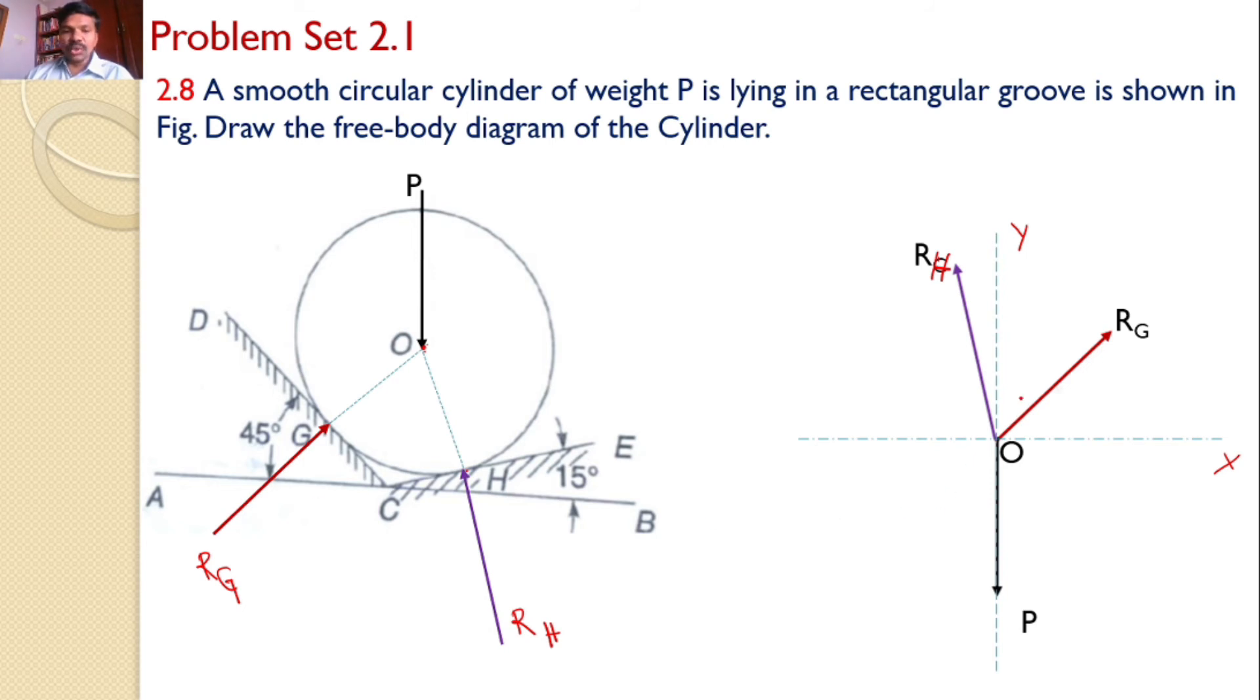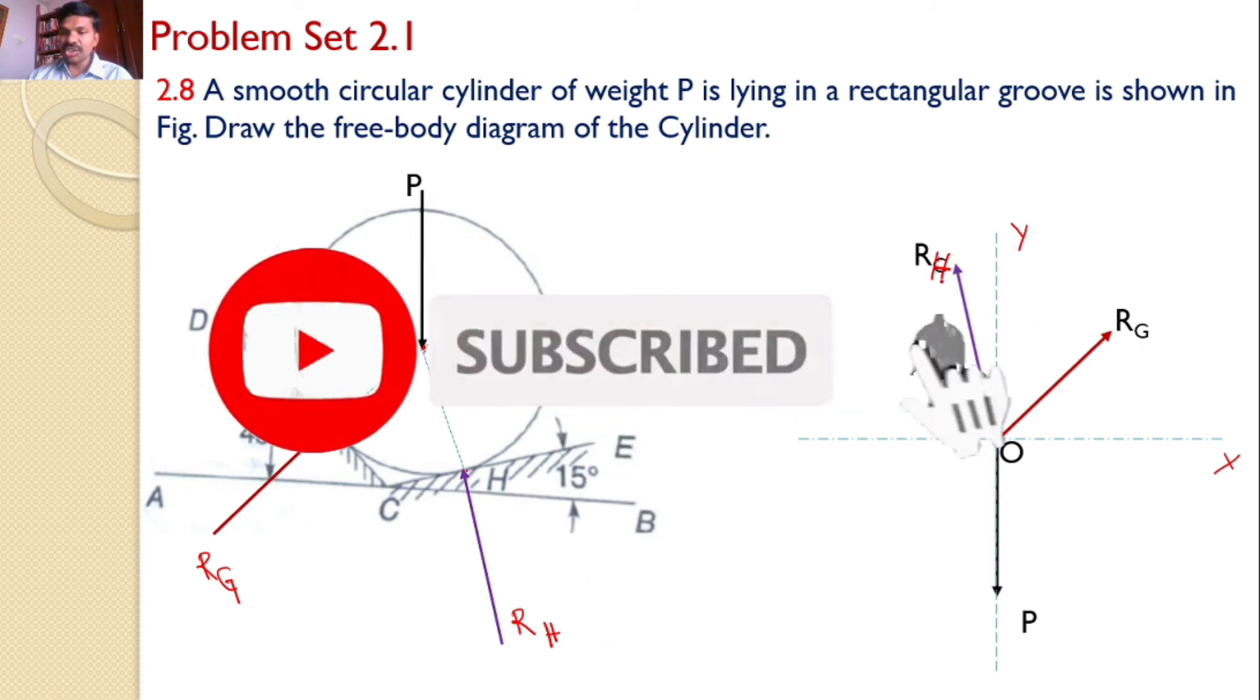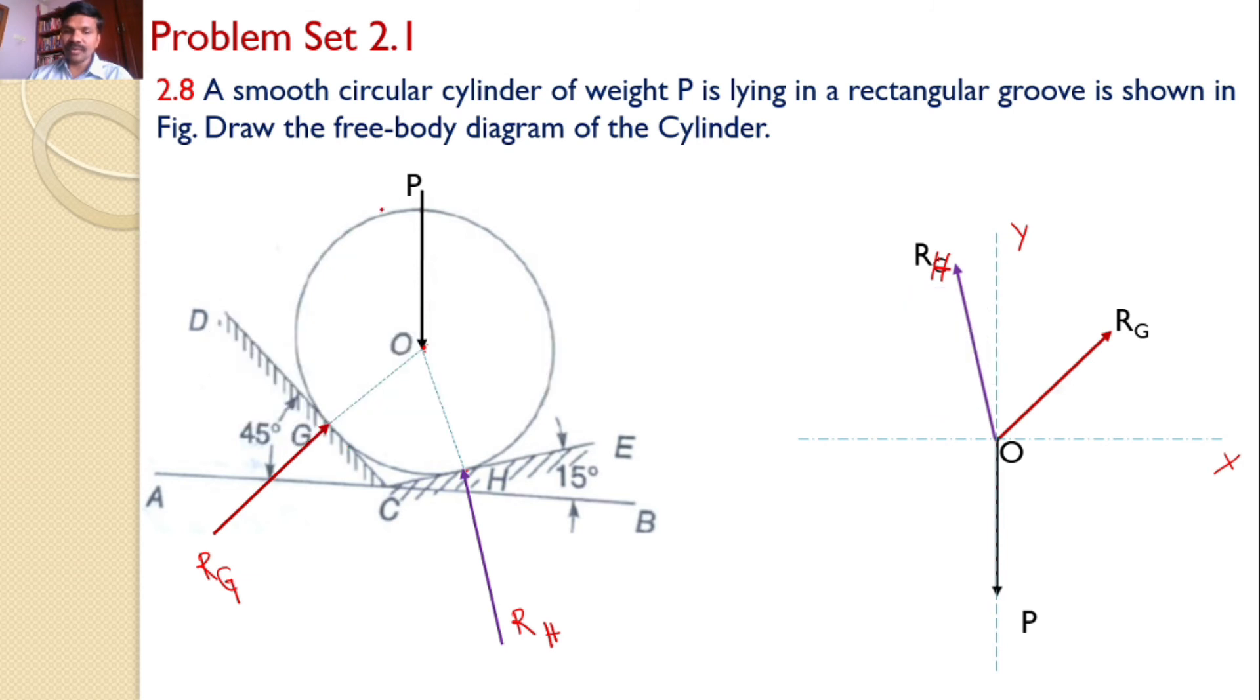We should represent the angles made by all these three forces. P is vertical. We need to represent the angles made by RG and R_H with the X and Y axes. RG is perpendicular to DC. Given that DC makes 45 degrees with the horizontal, RG makes the same angle, 45 degrees, with the vertical.